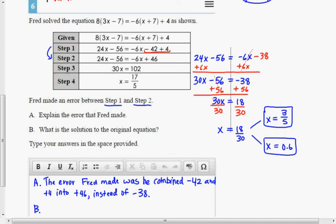If we want to check this, the original equation said 8 times 3 times x minus 7 should equal negative 6 times x plus 7 plus 4.